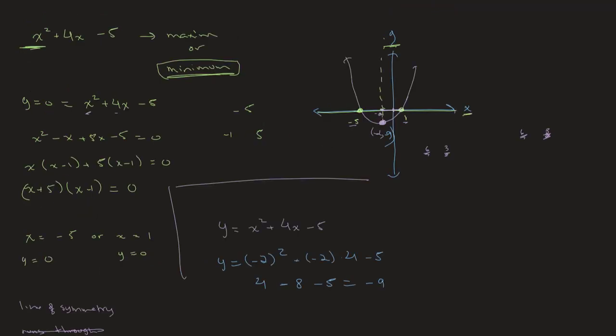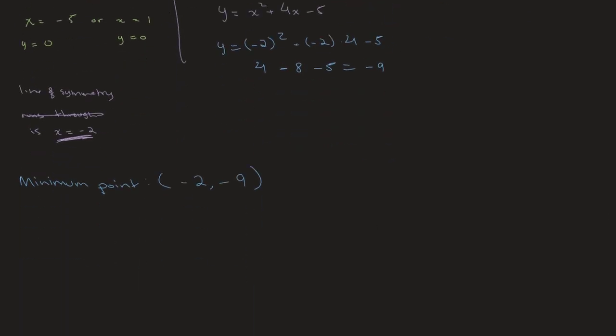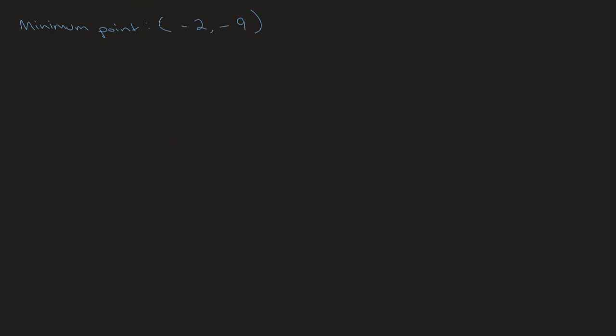In review, what we did was find the line of symmetry using our points of intersection, and using that we found the minimum point of our curve because the line of symmetry runs through the minimum point. Now the second method — which I mentioned before and won't go into much depth about — is solving for the maximum or minimum point by completing the square.